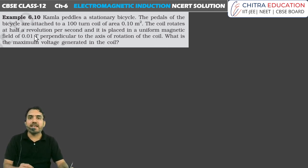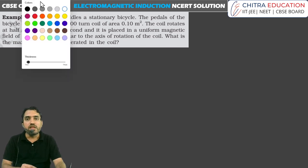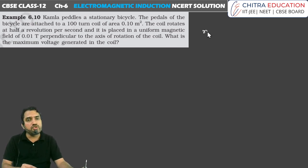The pedals of the bicycle are attached to a 100-turn coil of area 0.10 meter square. The coil rotates at half revolution per second. We talk about number of revolutions, RPM, RPS.